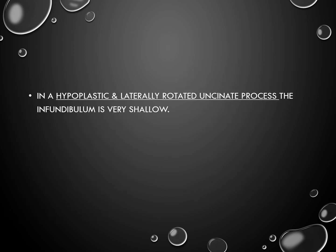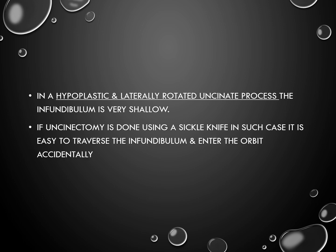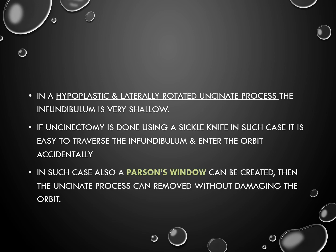In a hypoplastic and laterally rotated uncinate process, the infundibulum is very shallow, and if uncinectomy is done using a sickle knife in such a case, it is easy to perforate the infundibulum and accidentally enter and injure the orbit. In such cases also, a Parson's window can be created first, and then the uncinate process can be removed without damaging the orbit.